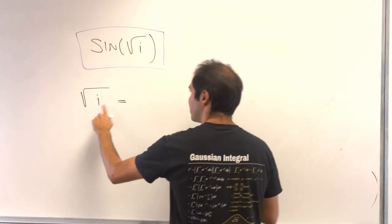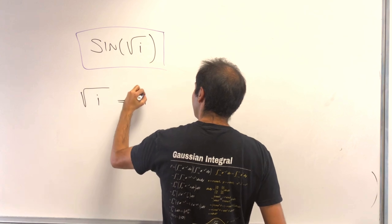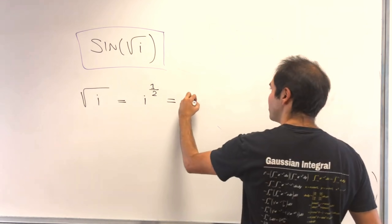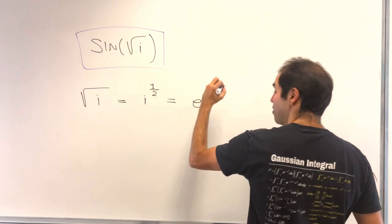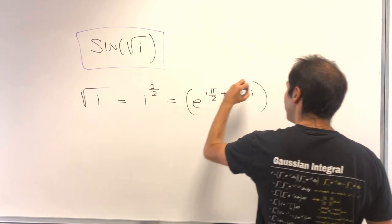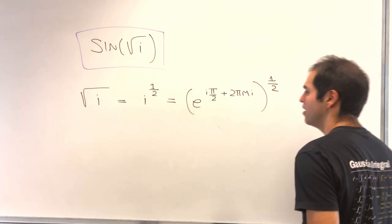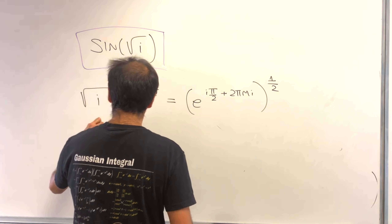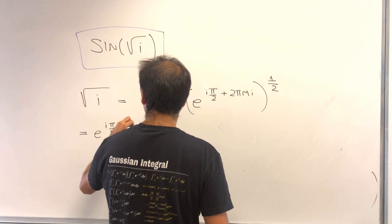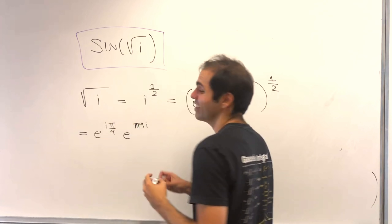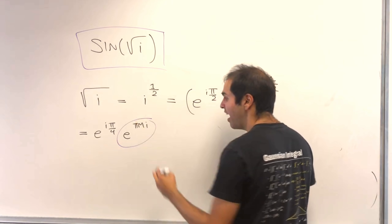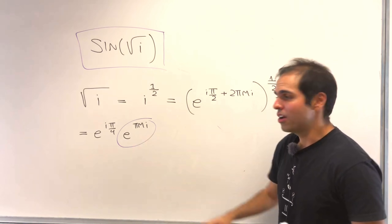Let me remind you the way it's done. Square root of i is i to the one-half. And i is just e^(i·π/2 + 2πmi), all raised to the one-half. Multiplying the exponents gives e^(i·π/4) times e^(πmi). Using cosine plus i sine, e^(πmi) is just plus or minus one.